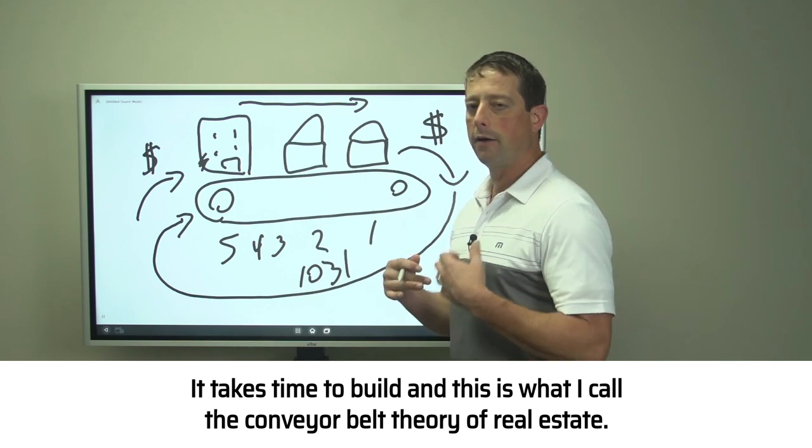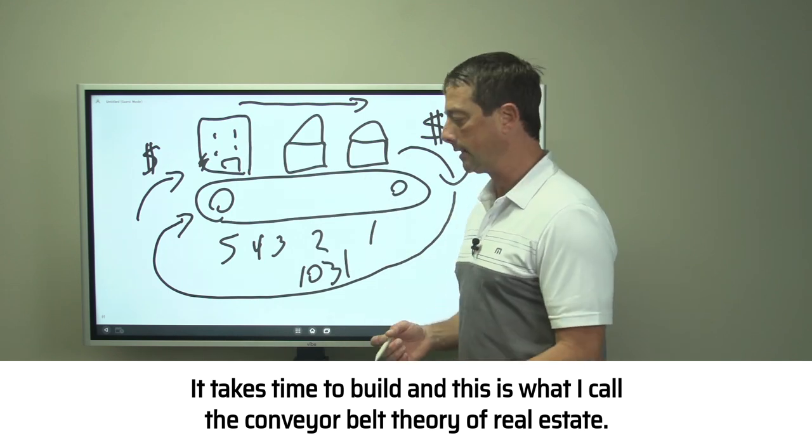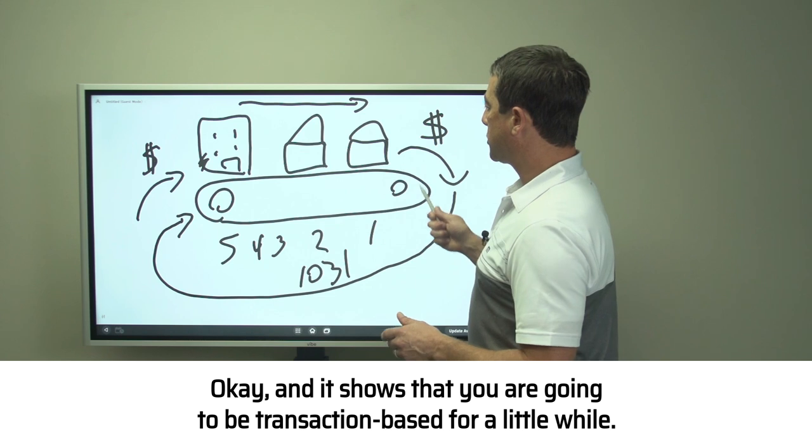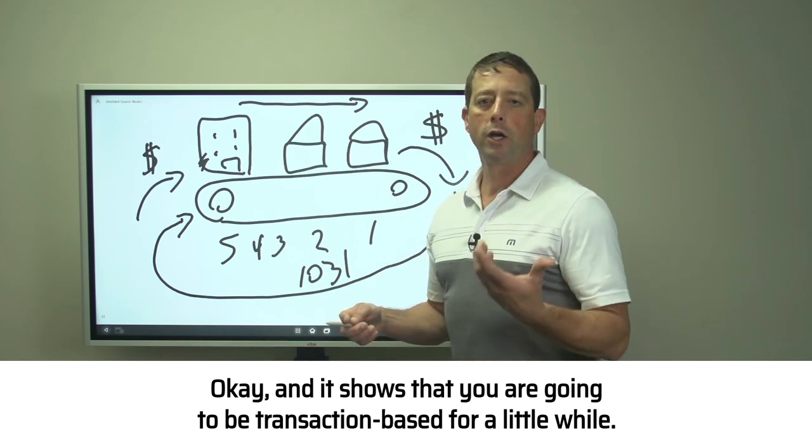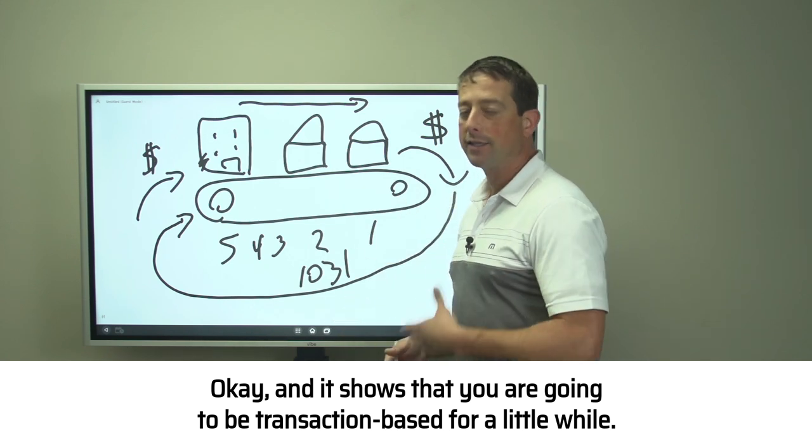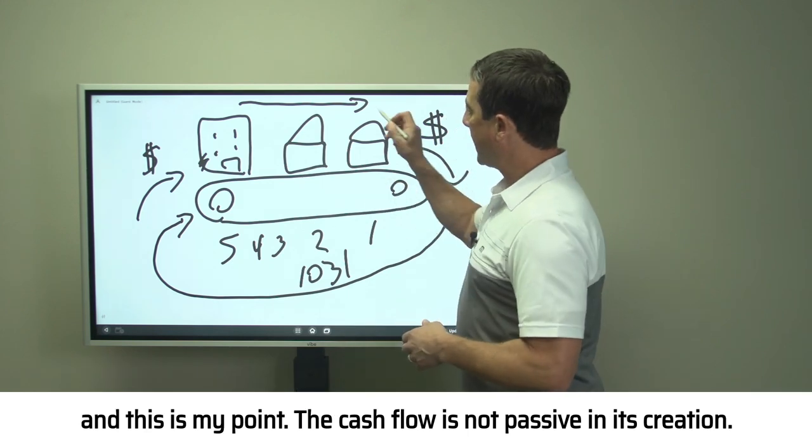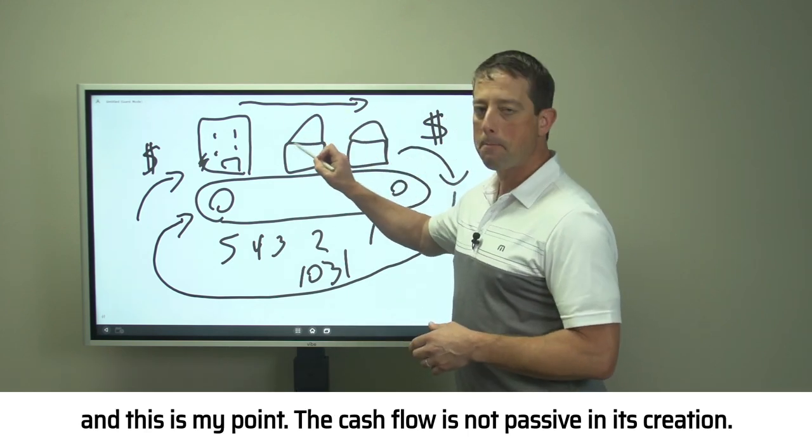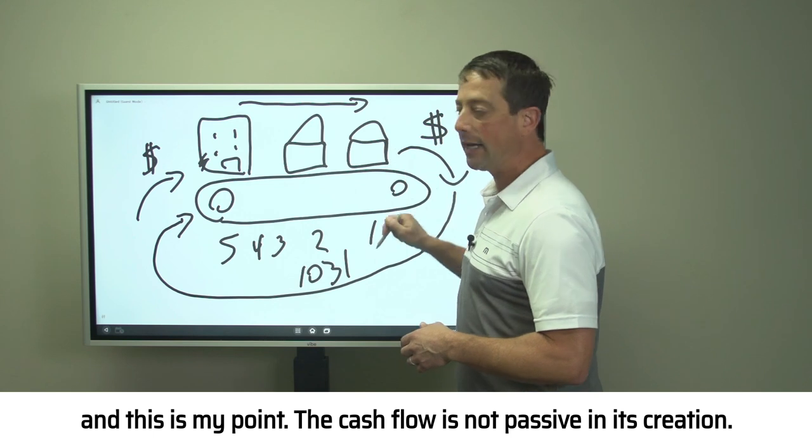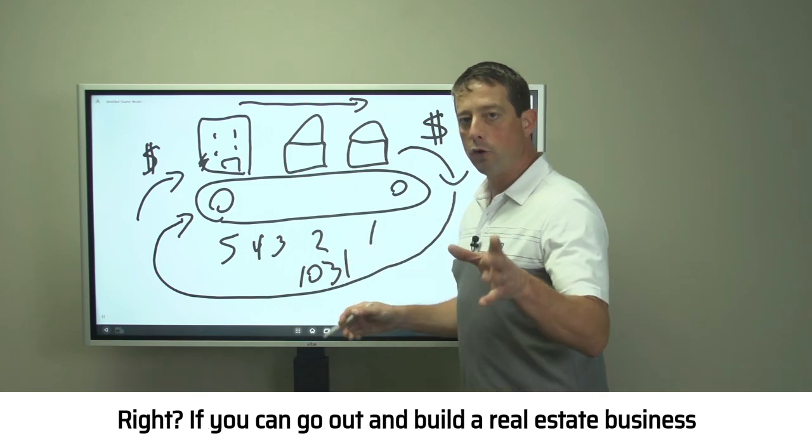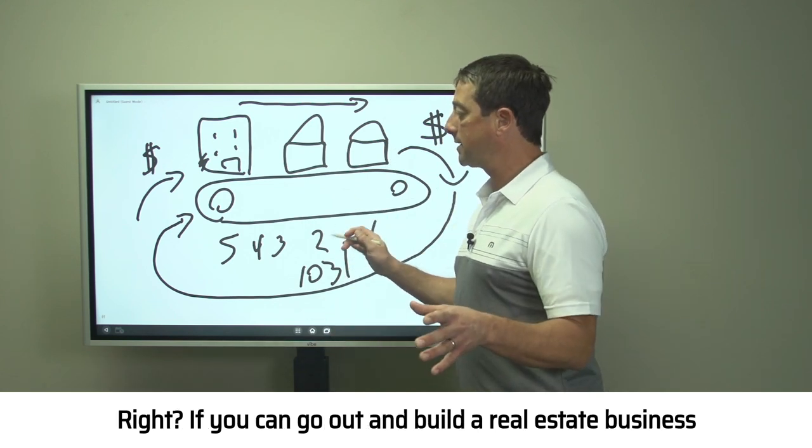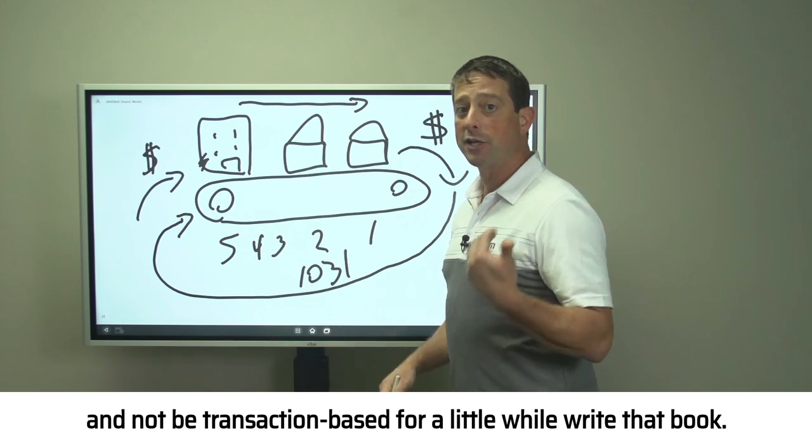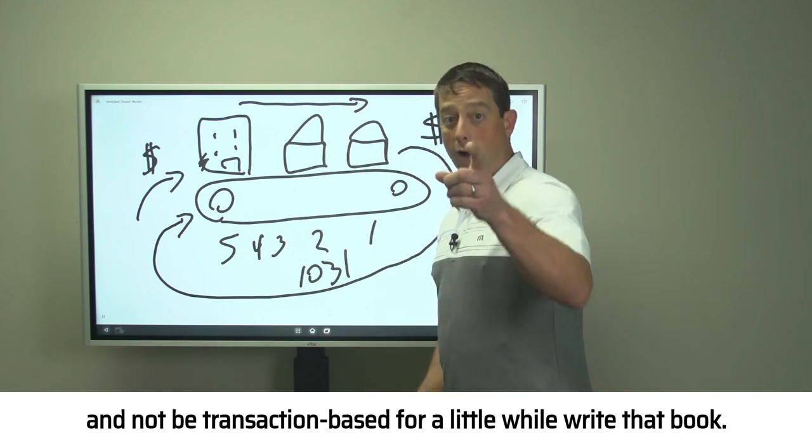This is what a real real estate business looks like. It takes time to build, and this is what I call the Conveyor Belt Theory of real estate. It shows that you are going to be transaction-based for a little while. This is my point: cash flow is not passive in its creation.